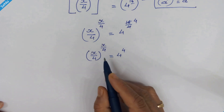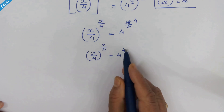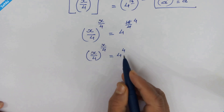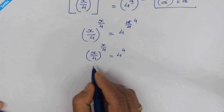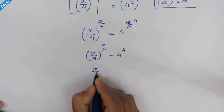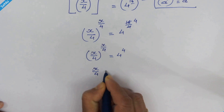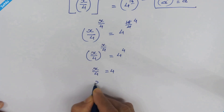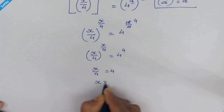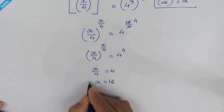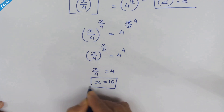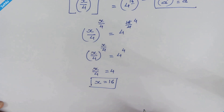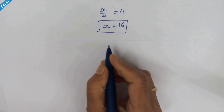Here we have the same base and exponent on both sides, so we can equate: x upon 4 is equal to 4. Therefore x is equal to 16 is our answer.